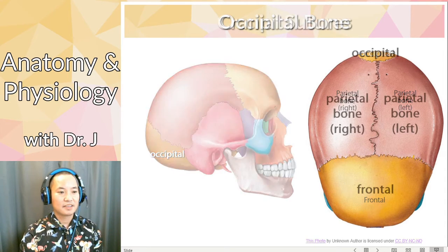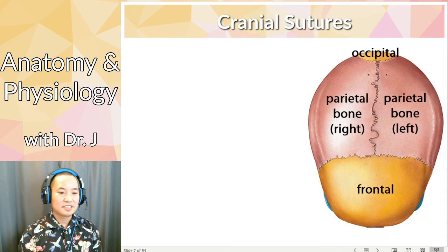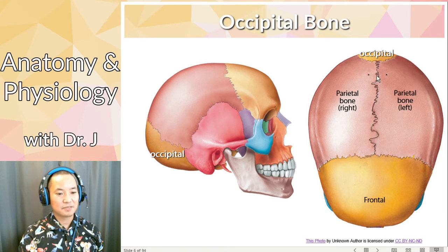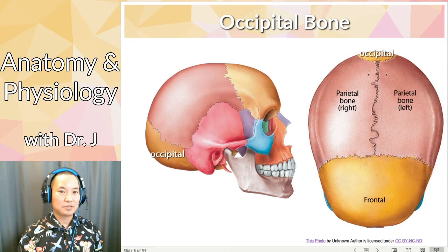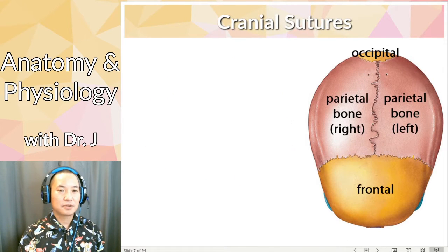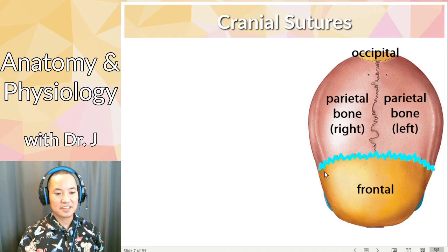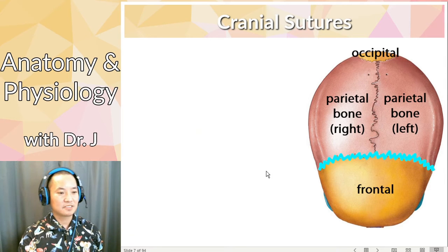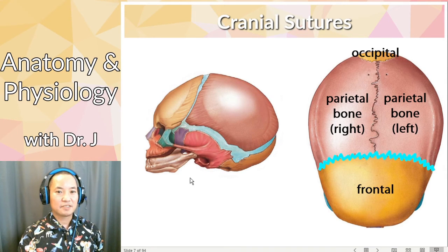Notice that all these bones are joined together — they're kind of fused but they have a line between them. These are called cranial sutures. You can see these little lines between the broad cranial bones — these are called sutures.